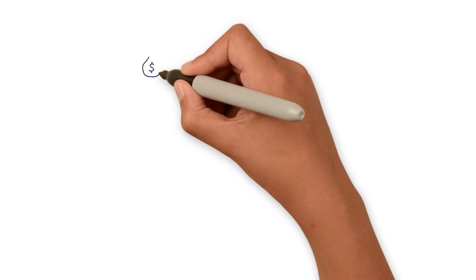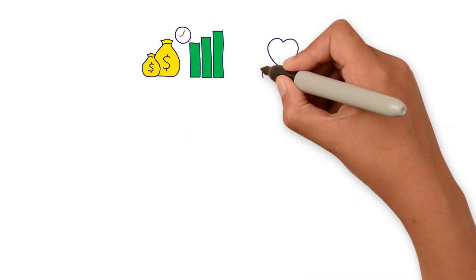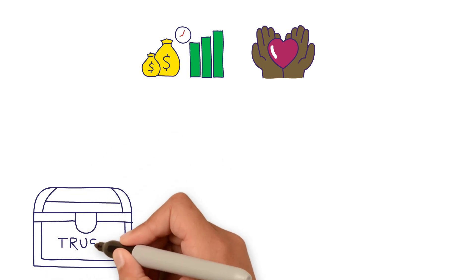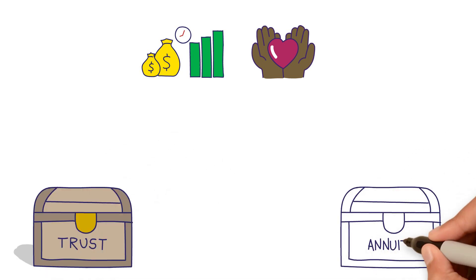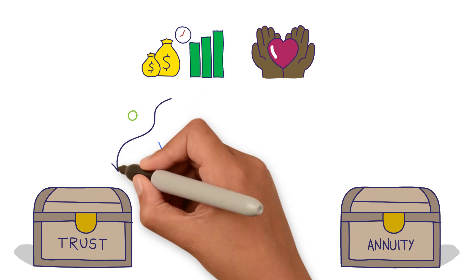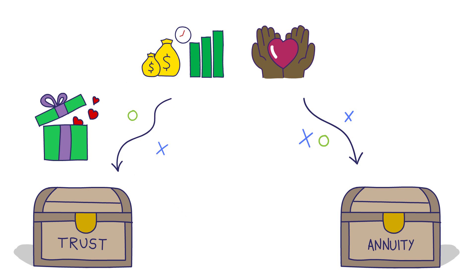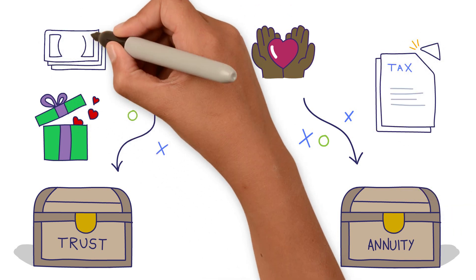If your strategy includes opportunities to earn income while continuing to support the causes you care about, a charitable remainder trust or a charitable gift annuity might be the right route for you. These playmaking tools provide an opportunity to make a charitable gift now, claim a partial tax deduction, and receive income payments for a period of years or lifetime.